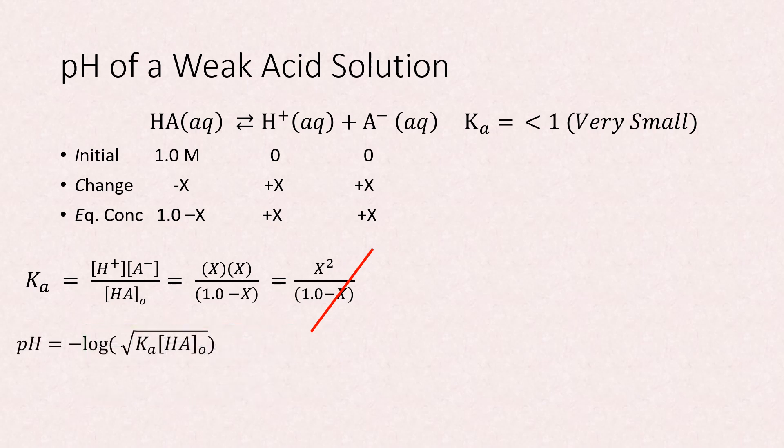Of course, when we make approximations, we should always check for errors. In this case, we'll check for what's called the percent dissociation. This is the percentage of the original acid that dissociates.